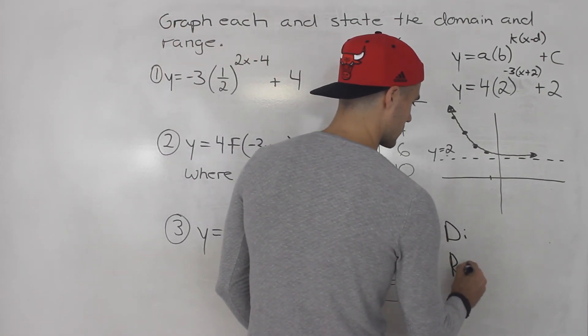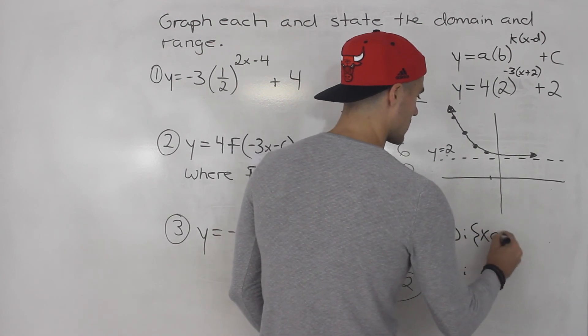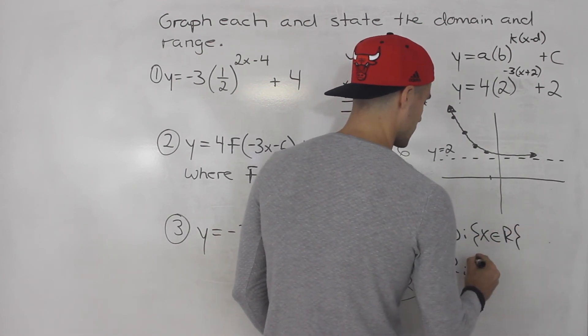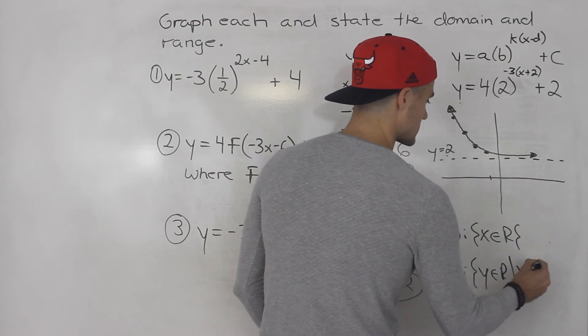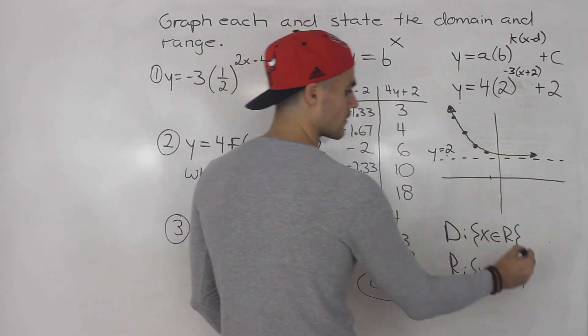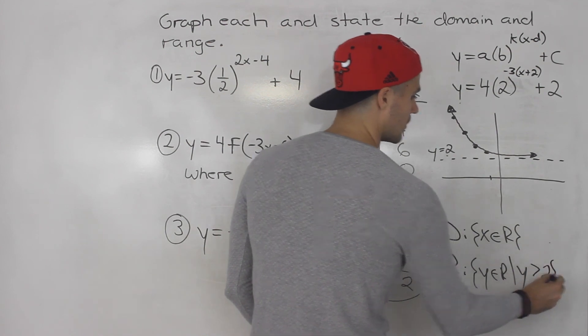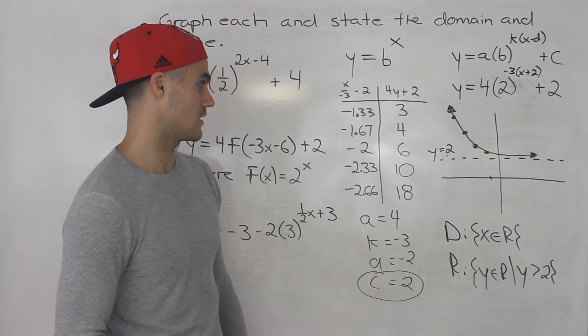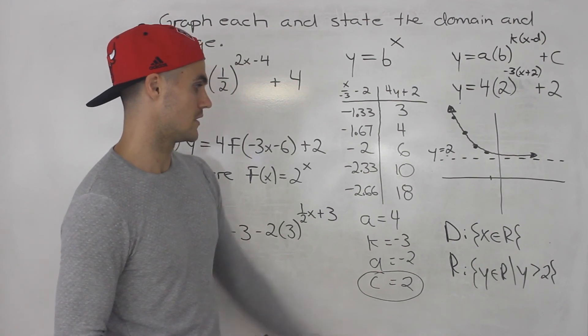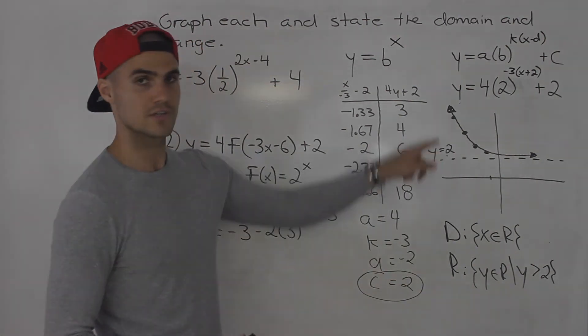So domain range - domain is always x∈ℝ as I mentioned for an exponential function, range is y∈ℝ but in this case all the y values have to be greater than 2 right because the graph is above that horizontal asymptote of 2. So that's the domain, that's the range, that's the graph.